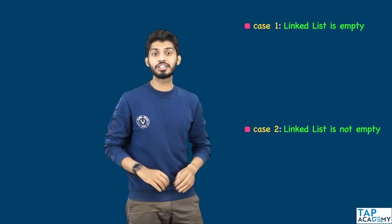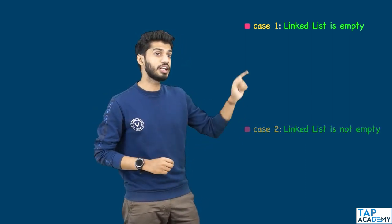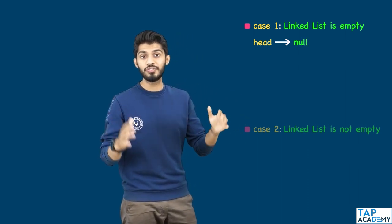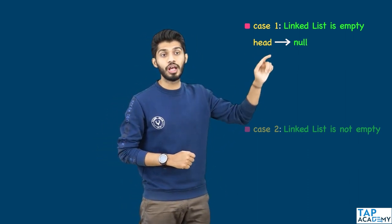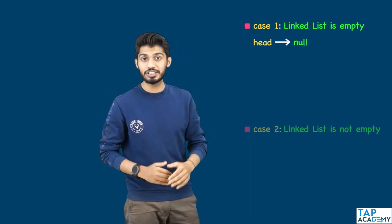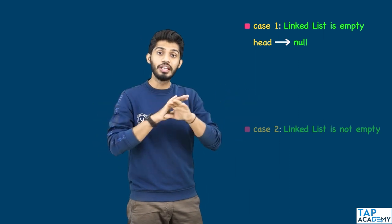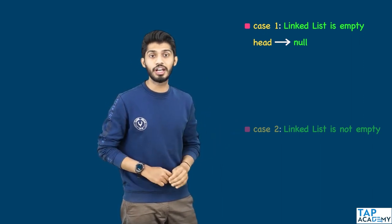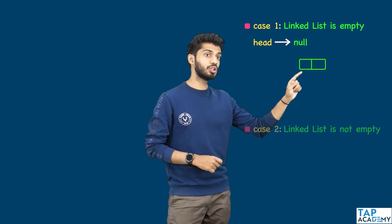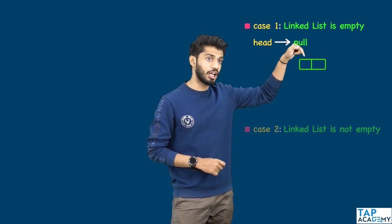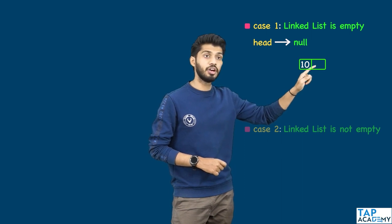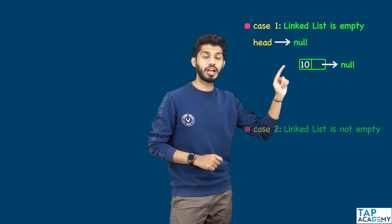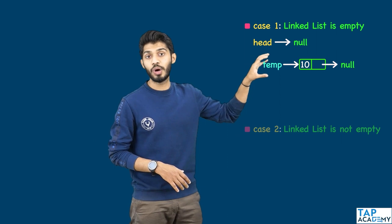Let's take the case when the linked list is empty. Every linked list will have something called 'head', and head will be pointing to null. Whenever head is pointing to null, we know that the linked list is empty. In both cases, one thing is for sure: we need to create a new node. When we create a node, the element is 10 and the next part will point to null. The reference to this node is stored in 'temp'.